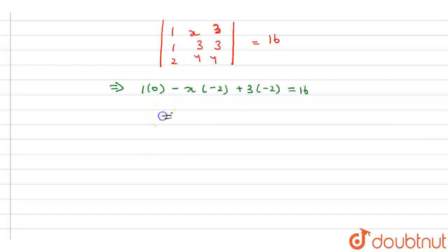Which implies 2X is equal to 22 which implies X is equal to 11. So the value of X is 11. Thank you.